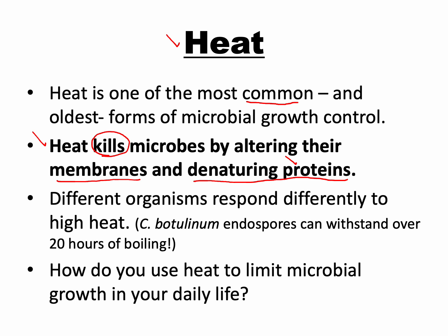Different organisms respond differently to high heat. For example, Clostridium botulinum — the causative agent for botulism — its endospores can withstand over 20 hours of boiling. We use heat in daily life lots of times: boiling food, using a microwave, or running the dishwasher. If you've ever unloaded your dishwasher right when it's finished, those dishes are very hot, and that high heat helps kill microbes during the washing cycle. Heat limits the microbial load on us and the objects around us.